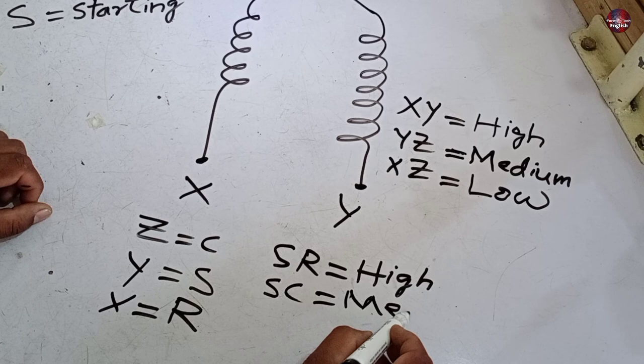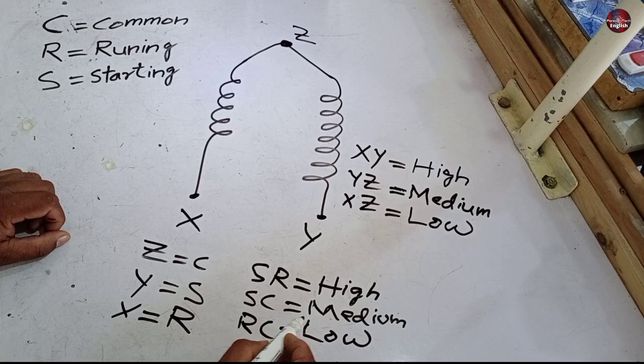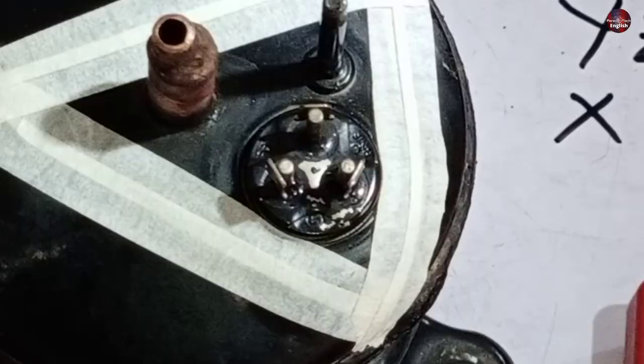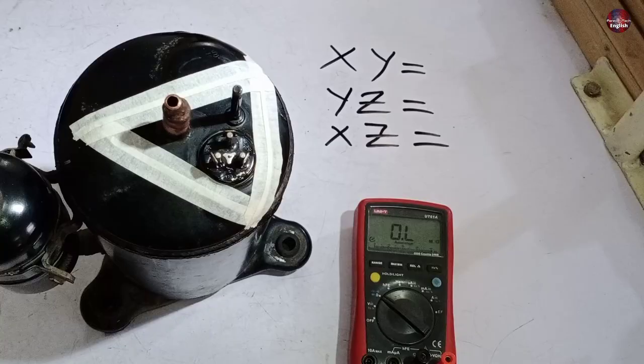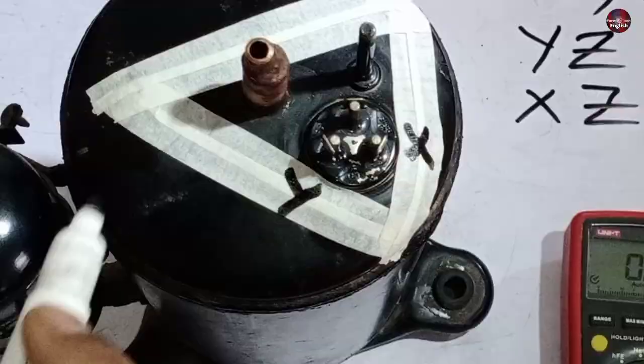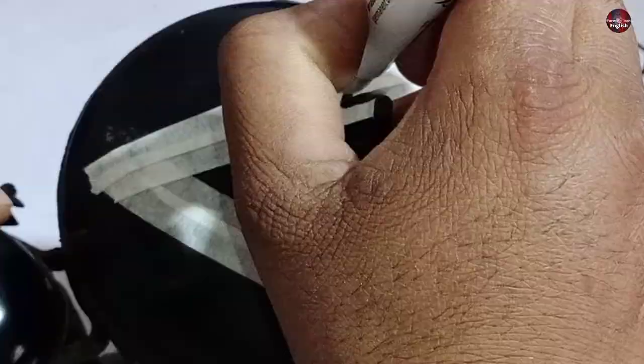I hope you understand the theory through the diagram. Now I will show the procedure practically. I have attached masking tape to the compressor. The compressor has three terminals. Now the formula I told you would apply here. I am writing X over here, Y on the left side, and I am writing Z on the top.